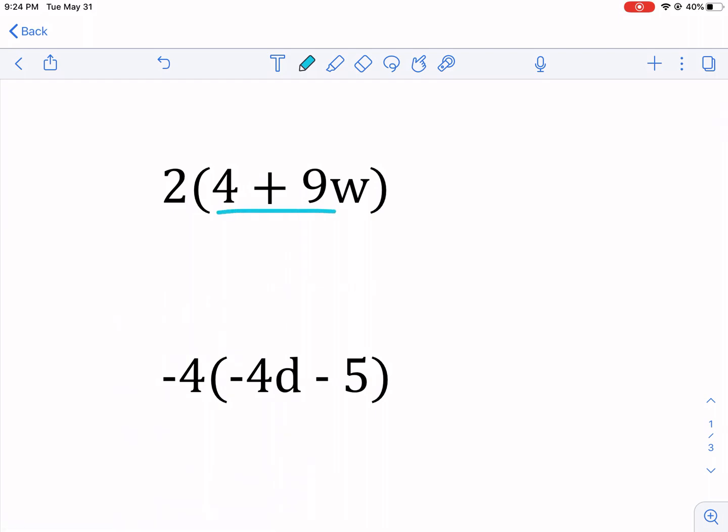For example, number 1, we have 4 plus 9w. You can't simplify that any further, but what we can do is distribute this 2 being multiplied by both those terms inside. So we have 2 times the 4. That gives us 8 plus 2 times, I'm going to actually write it out for this first example, even if it's a little tedious, plus 2 times the 9w.